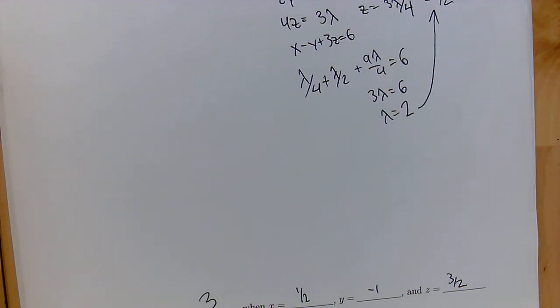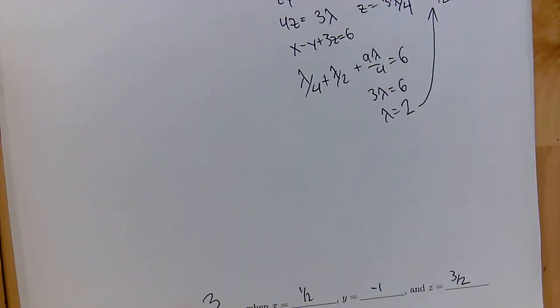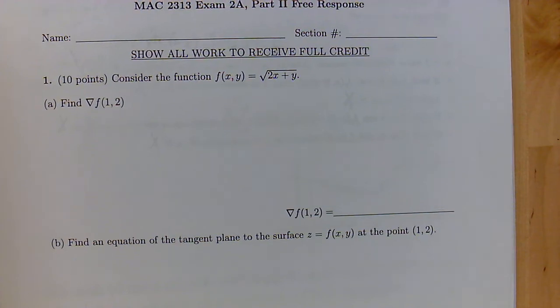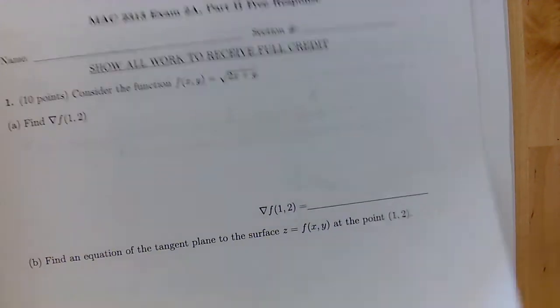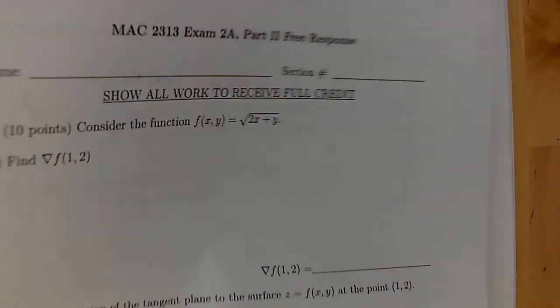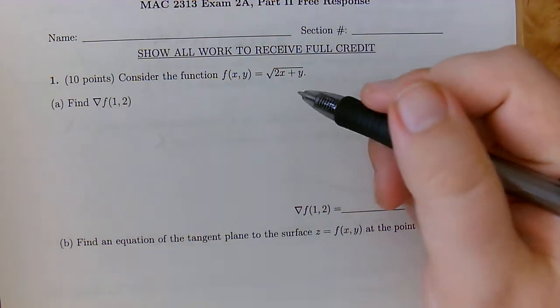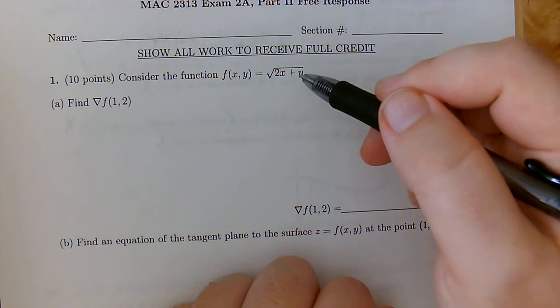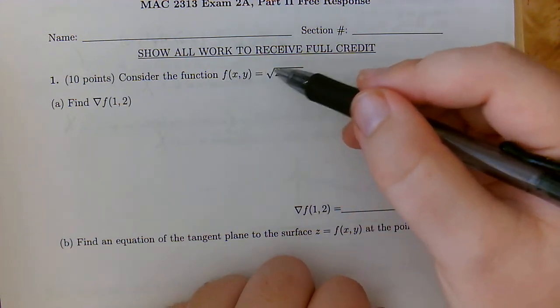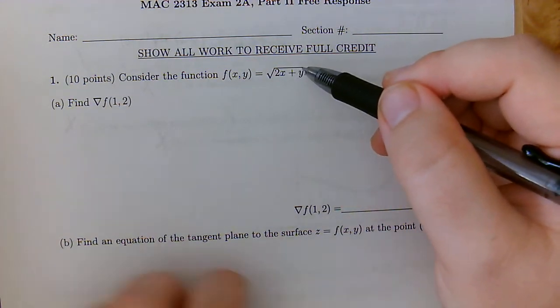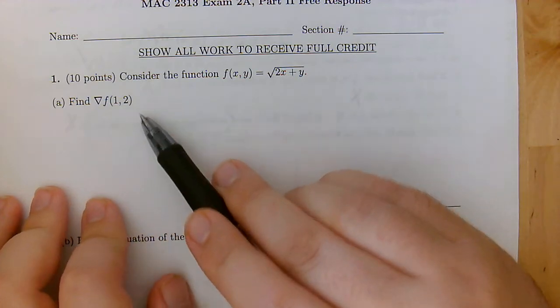All right. I found the other page. It was actually just on the back of problem 16. I thought that was a blank on the back there. So anyways, let's go ahead and finish this up. So number 1 here, consider the function f(x,y) is root 2x plus y. Find the gradient at the point (1,2).